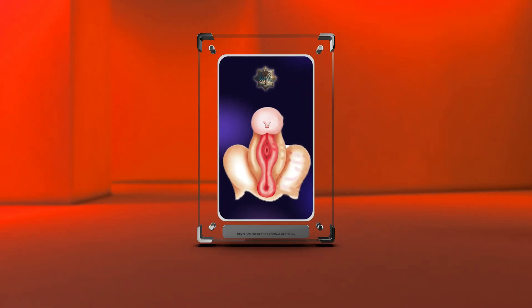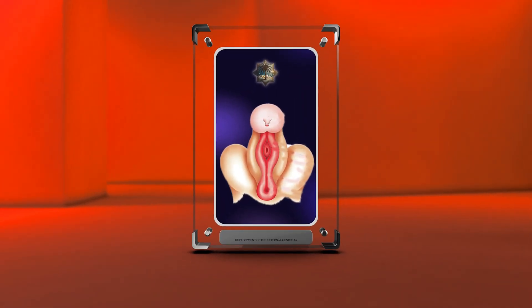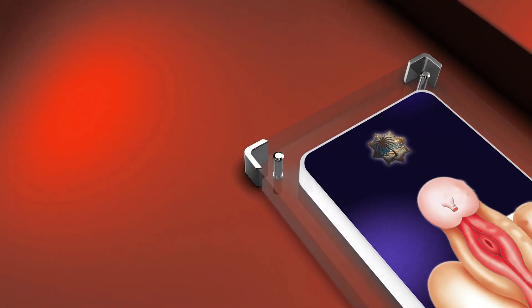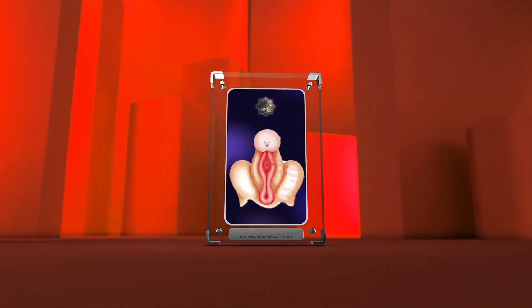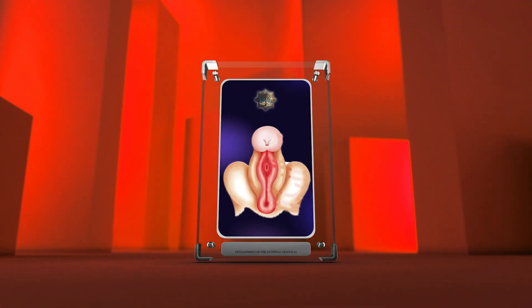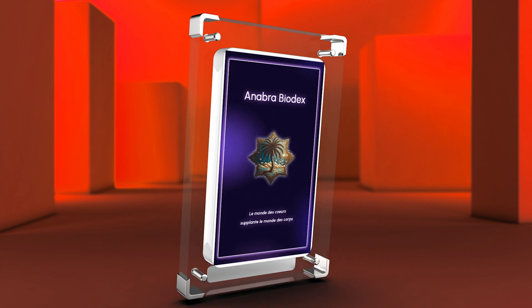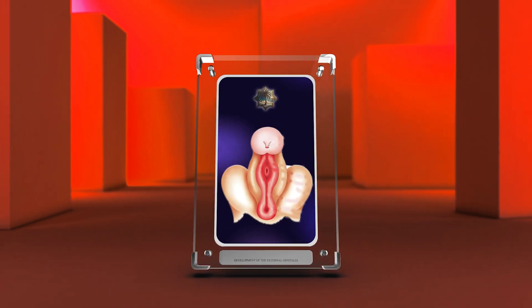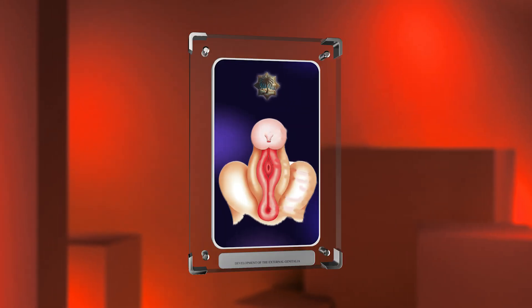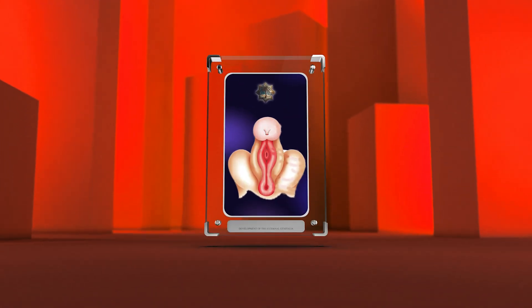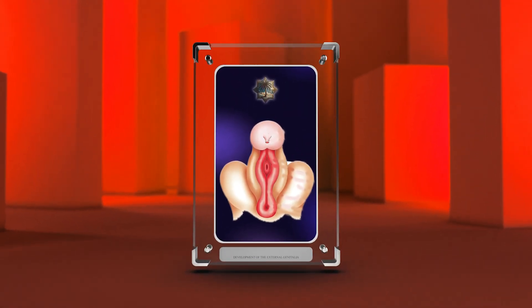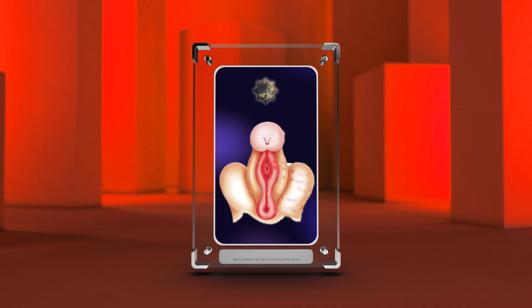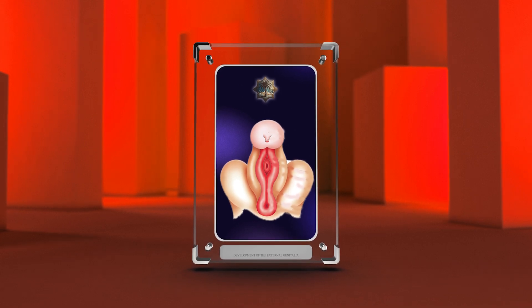In this video, we will discuss the development of the external genitalia, including sexual differentiation, hormonal regulation, and morphological changes. We will explore the complex interplay of molecular and genetic mechanisms involved in this process, as well as the factors that can lead to developmental abnormalities. Join us as we delve into this captivating subject and uncover the remarkable transformations that occur during external genitalia development.